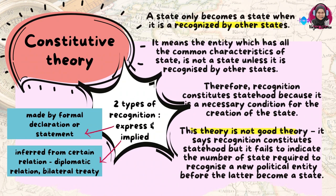That covers the declarative theory. Under the constitutive theory, a state only becomes a state when it is recognized by other states. An entity that has all the common characteristics of a state is not a state unless it is recognized — recognition constitutes statehood. There are two types of recognition: expressed and implied. Expressed recognition is made by formal declaration or statement, while implied recognition is inferred from certain acts, such as diplomatic relations or the conclusion of a bilateral treaty.